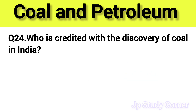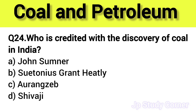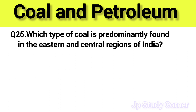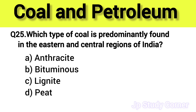Question number twenty-four: who is credited with the discovery of coal in India? The right answer is option A — John Sumner. Question number twenty-five: which type of coal is predominantly found in the eastern and central regions of India? The right answer is option B — bituminous.